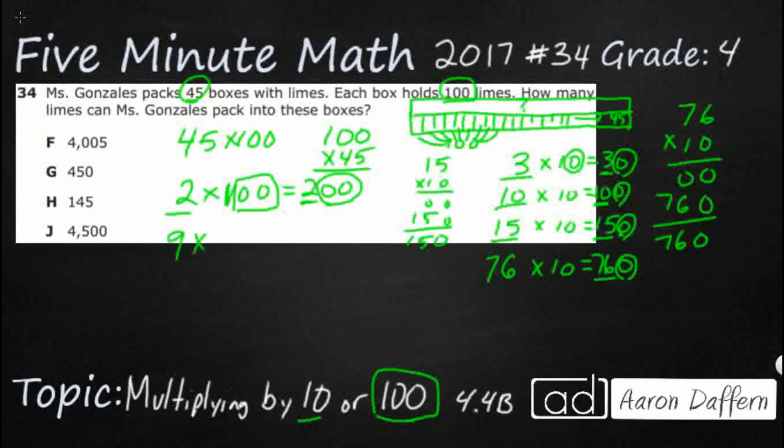So if we were to do 9 times 100, well we know that's 900. Look what that is. That's 9 with 2 zeros. So if we were to do 10 hundreds, skip count by 100s.